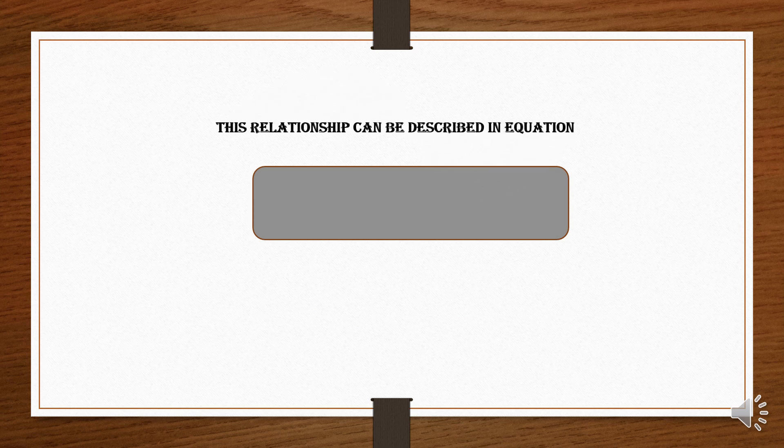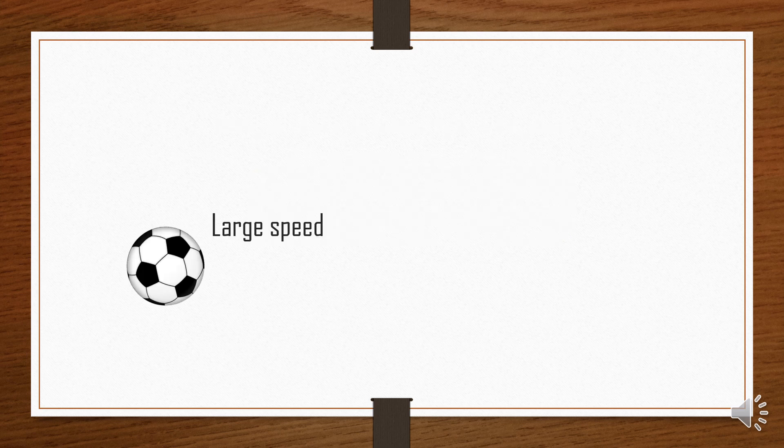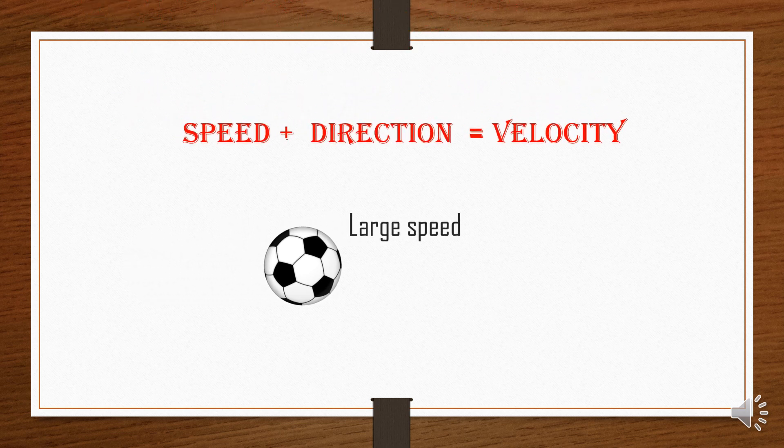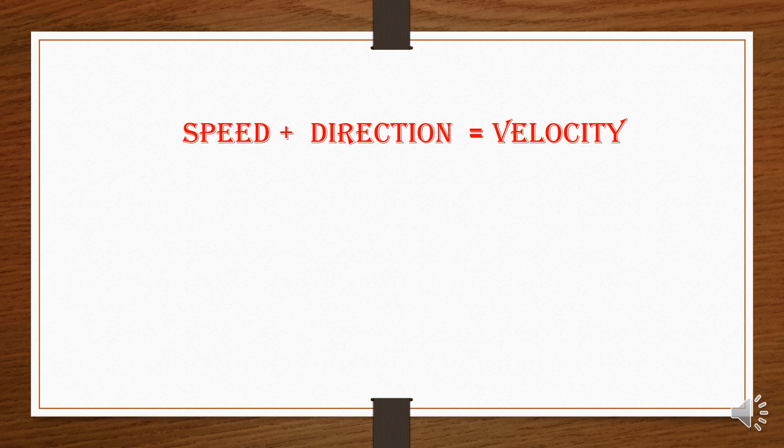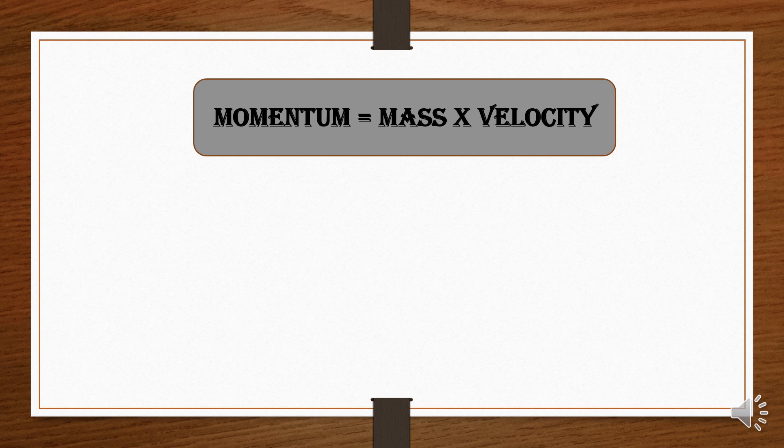This relationship can be described in an equation. Momentum is equal to mass times velocity. You may remember that velocity is speed with direction. So an object with large speed has also large velocity. Our momentum equation can be simplified even more by substituting the words with symbols: p is equal to m times v.